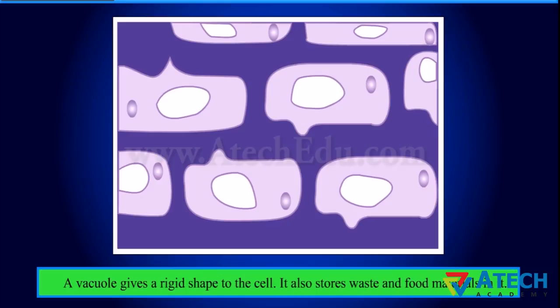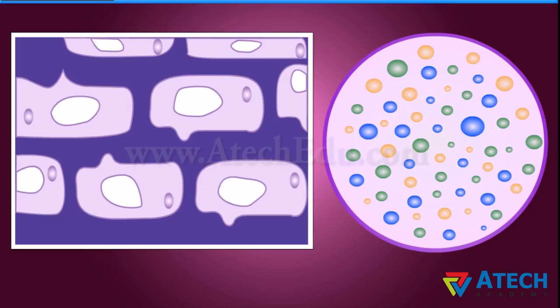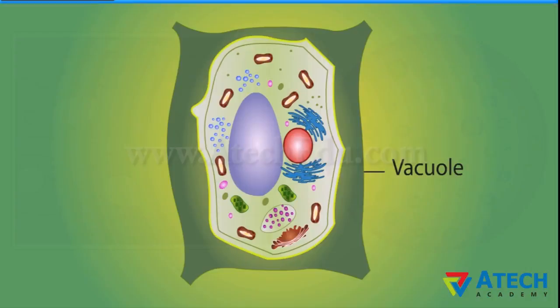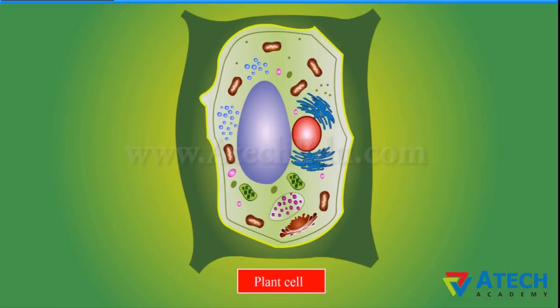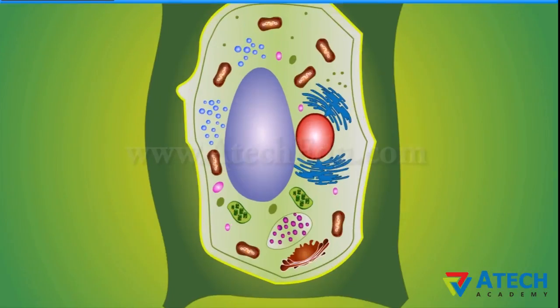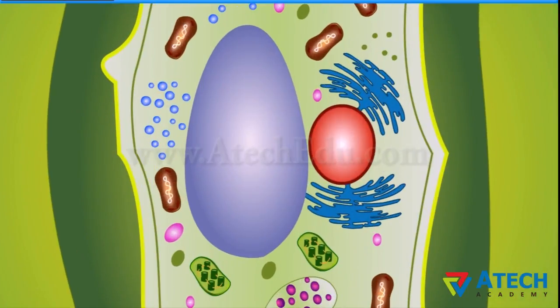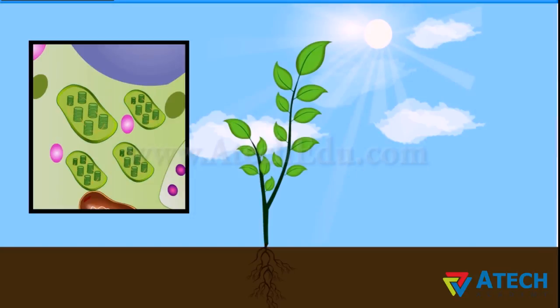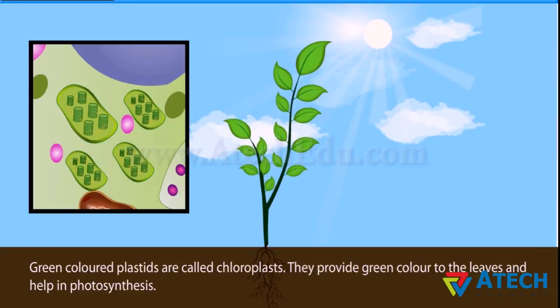Do you see the colored structures present in the plant cell? These are called plastids. They are of different colors. Some of them contain green pigment called chlorophyll. Green-colored plastids are called chloroplasts — they provide green color to the leaves and help in photosynthesis.